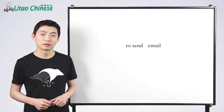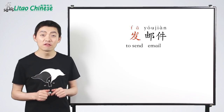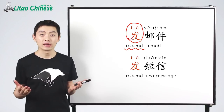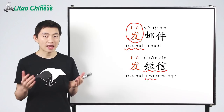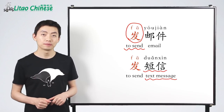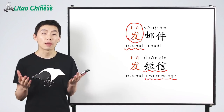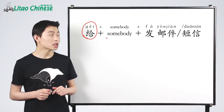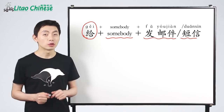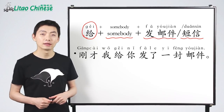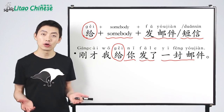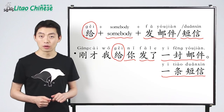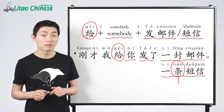To send email，用汉语，你可以说发邮件。发意思是to send。你还可以发短信，短信是text message。如果你想说to send email or text message to somebody，用汉语，你需要这个structure：给 plus somebody plus 发邮件 or 短信。比如，刚才我给你发了一封邮件 or 一条短信。条 is the measure word for text message。